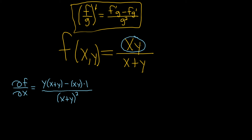To recap: differentiating with respect to x, y is a constant, so the derivative of x is 1 and we get y times the bottom, minus the top times the derivative of the bottom. The derivative of x is 1 and the derivative of y is 0, all over the bottom squared.